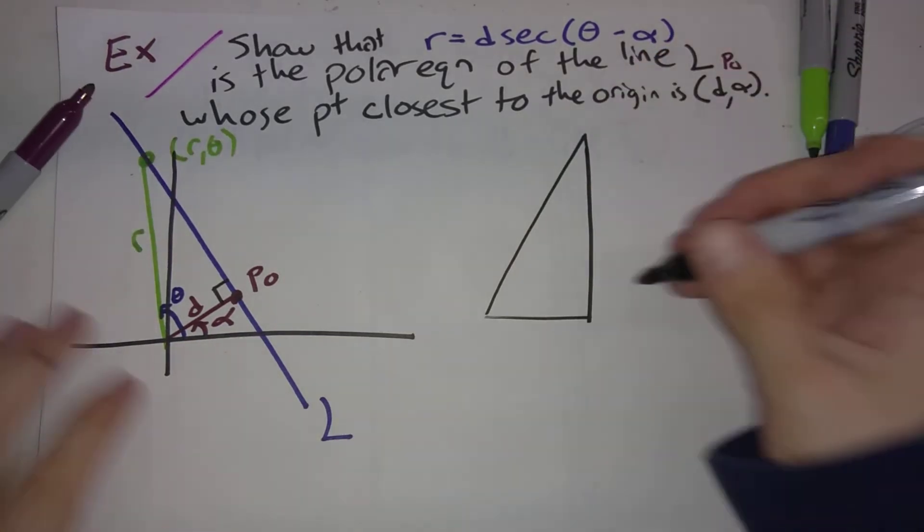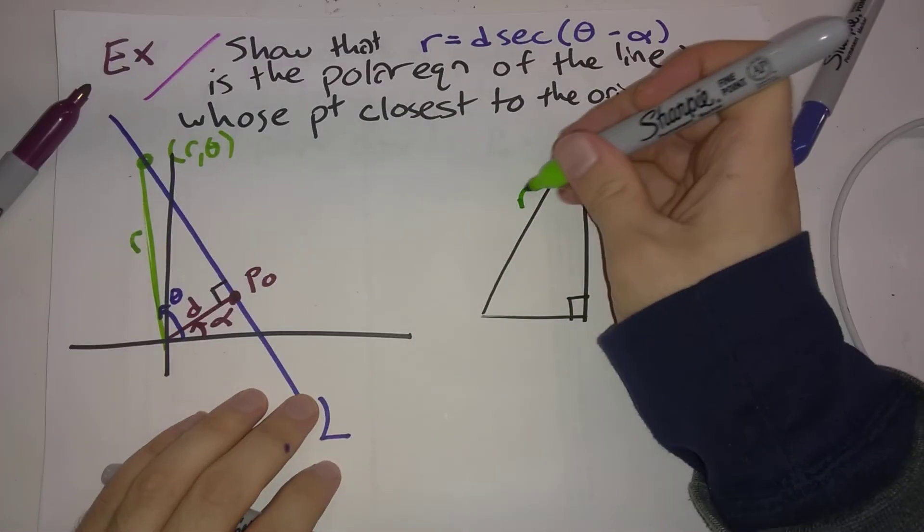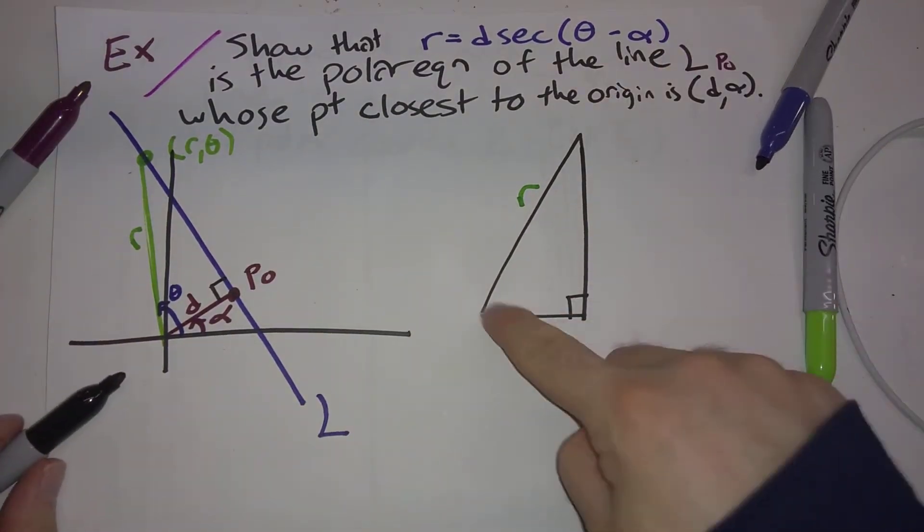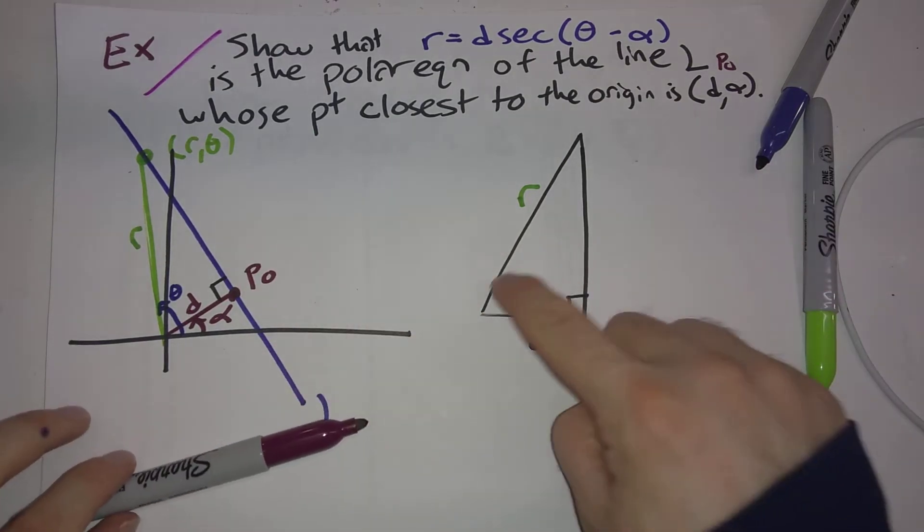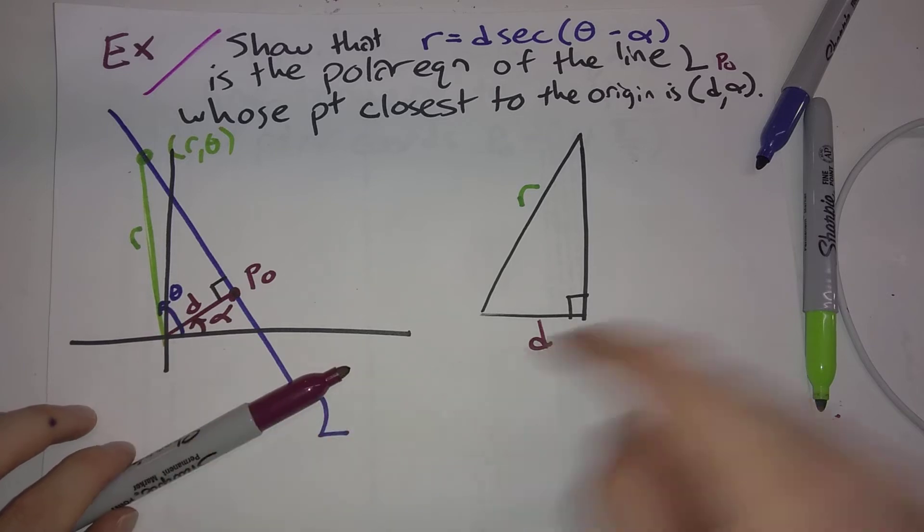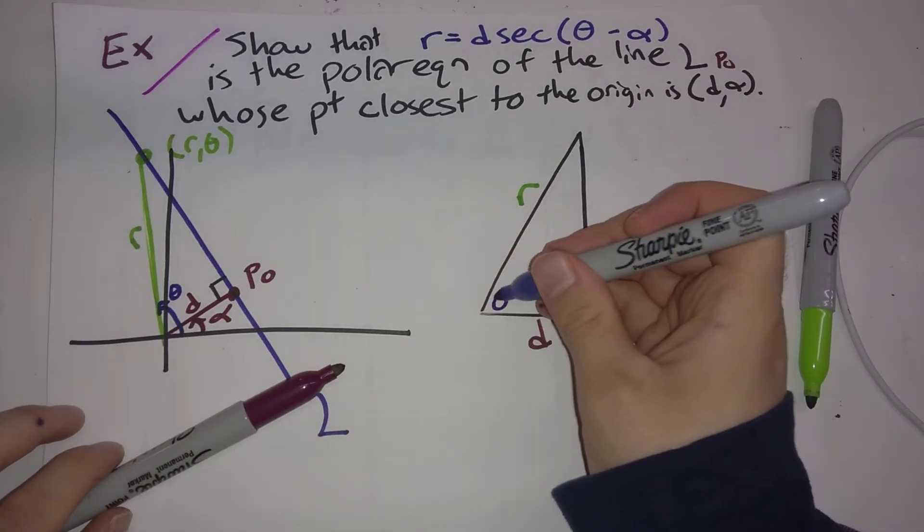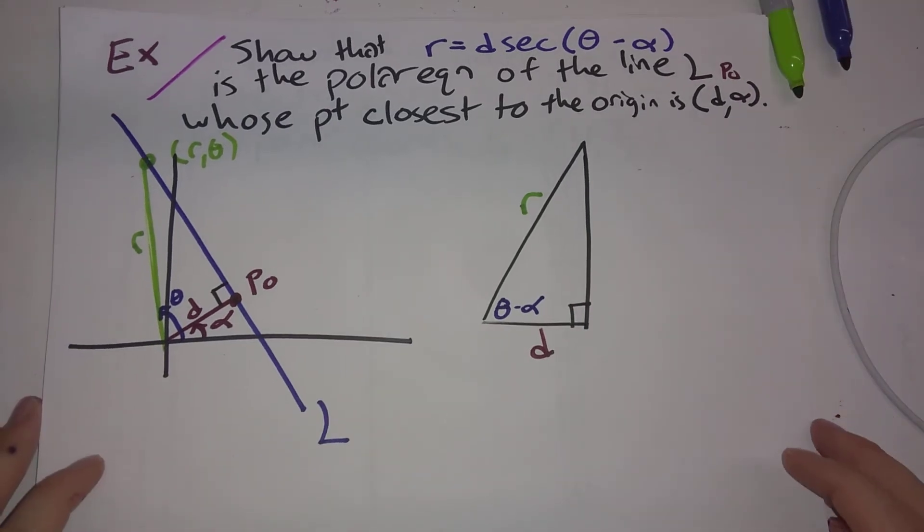So what's going on? Right angle. So this right here, that's R. This right here, that's D. This angle in here, it's theta minus alpha.